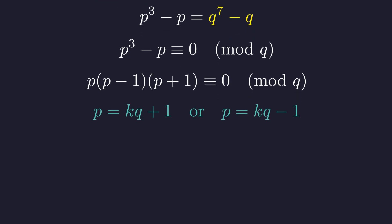This implies that p must be of the form k times q plus or minus 1, for some integer k. This is a strong constraint on the relationship between p and q.